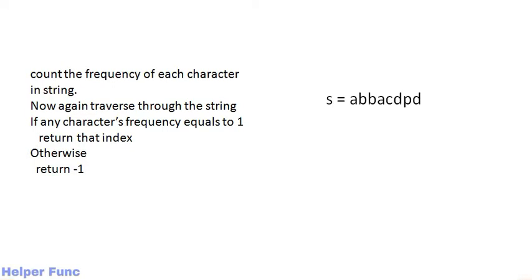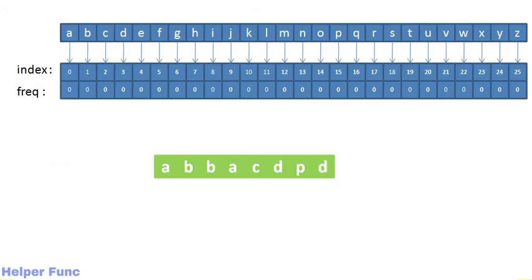Let's understand with an example. We create an array named 'frequency' of size 26 initialized with 0, since the string only contains lowercase characters. Index 0 to 25 is mapped to A to Z, so A corresponds to index 0 and Z corresponds to index 25. We then traverse the string and increment the count of each character we encounter in our frequency array.